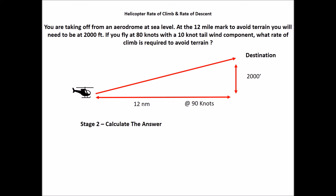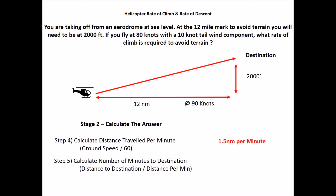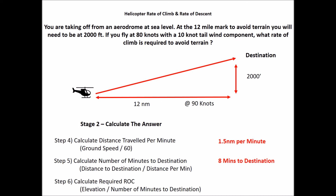Stage two, calculate the answer. Step four, distance travelled per minute: 90 knots divided by 60 gives 1.5 nautical miles per minute. Step five, number of minutes to destination: 12 miles divided by 1.5 miles per minute gives 8 minutes. Step six, required rate of climb: 2000 feet divided by 8 gives 250 feet per minute required rate of climb.